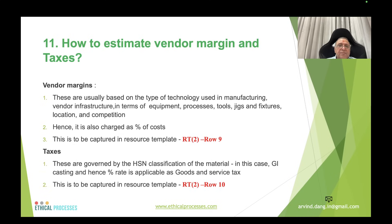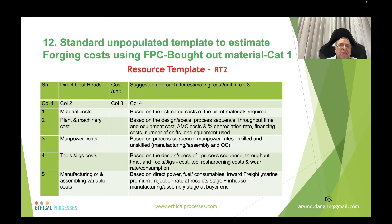Vendor margin is charged as a percentage based on the type of technology, infrastructure (equipment, process, tools, jigs), and industry practice — captured in row 9. Taxes are governed by the HSN classification; for forgings, the applicable GST percentage applies as goods and services tax, captured in row 10 of resource template RT2.